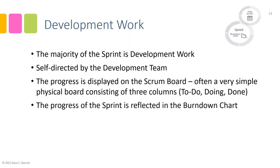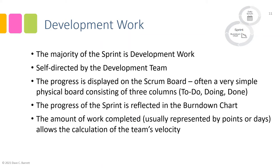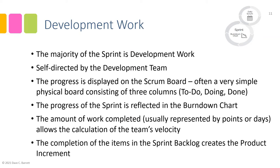The progress of the sprint is also reflected in a burndown chart, which shows the amount of work remaining in the sprint. The amount of work completed — usually represented by points or days — allows for the calculation of the team's velocity: how much work they can accomplish during a sprint. The idea is to hopefully increase a team's velocity as it proceeds through the sprints and into future projects as well.